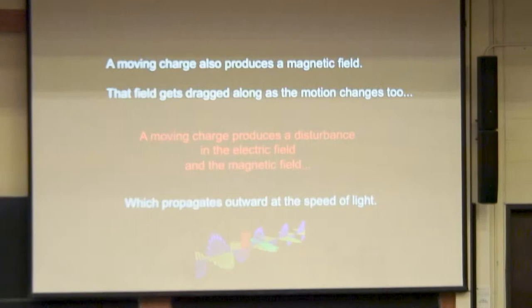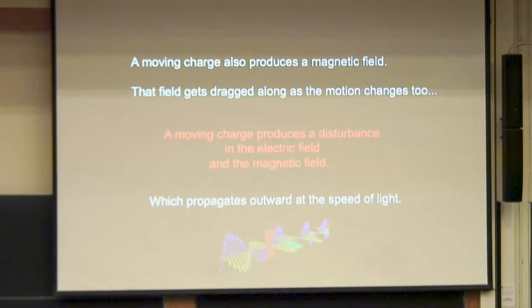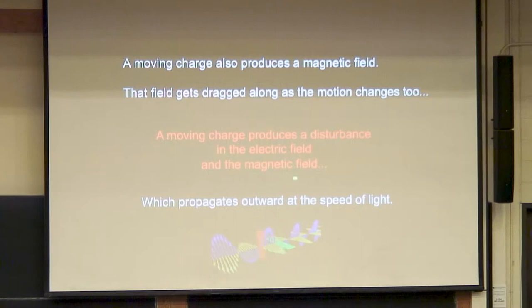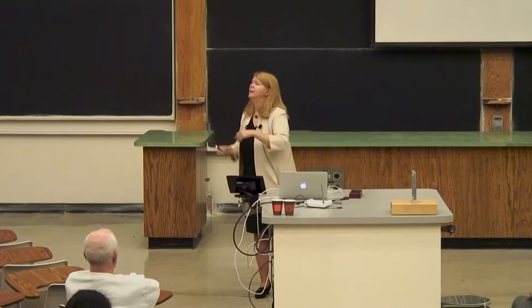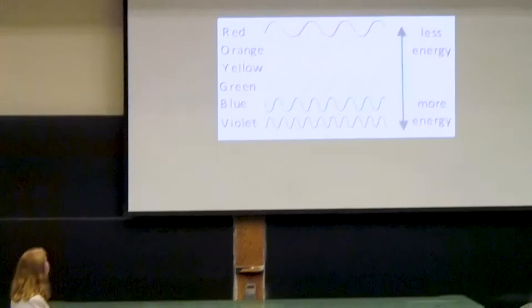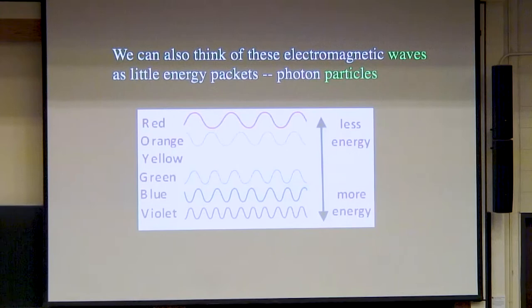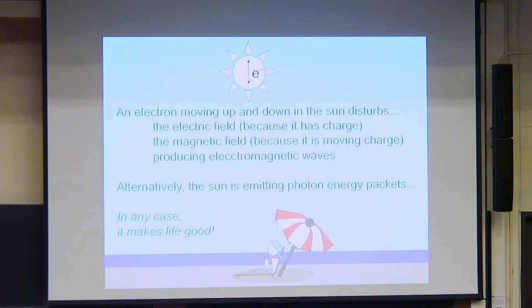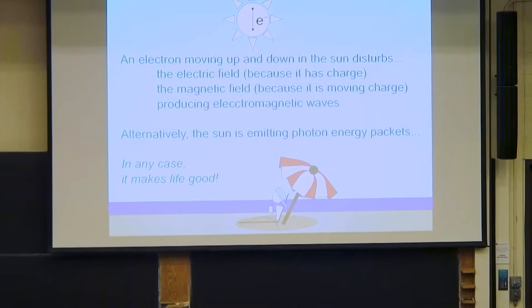A moving charge produces a wiggly electric field line. It also produces a magnetic field, and that field also gets dragged along as the motion changes. A moving charge produces a disturbance in both the electric and the magnetic field, and that's what's propagating through space at the speed of light — bringing light from the sun to where you are sitting on the beach. We can think of these electromagnetic waves as little energy packets — photon particles — or we can think of them as waves. An electron moving up and down in the sun disturbs the electric and magnetic fields and produces electromagnetic waves, or the sun is producing little energy packets of photons coming to you.